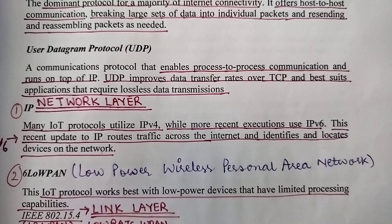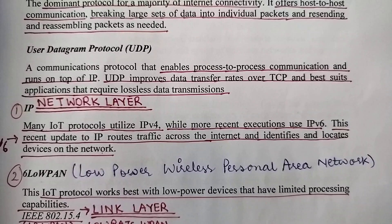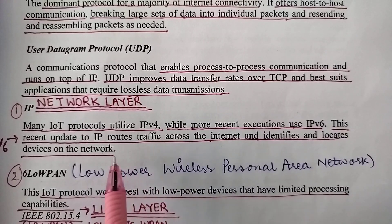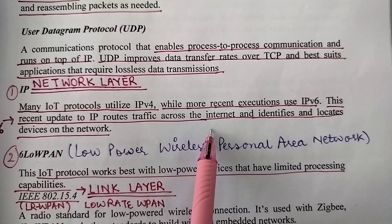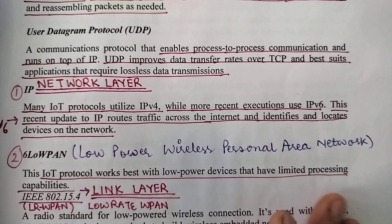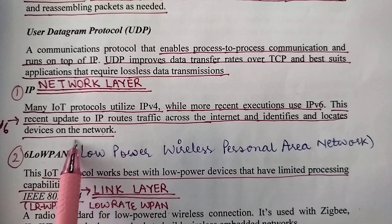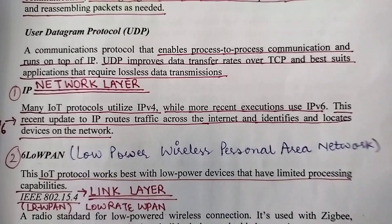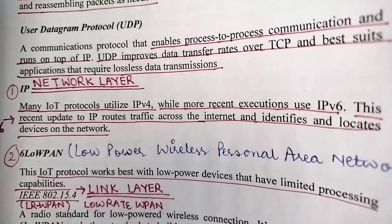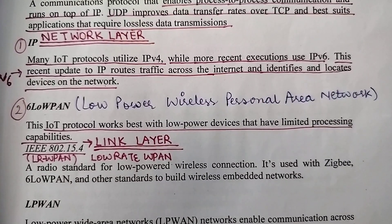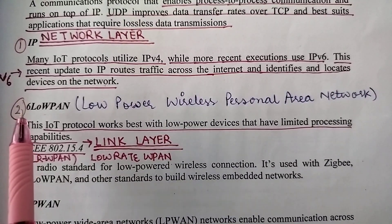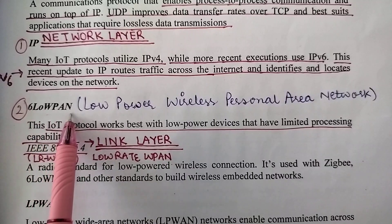An added advantage of IP version 6 is that it provides better traffic routing across the internet and helps in identifying and locating devices on the network. Now, other than IP version 4 and IP version 6, the third protocol used at the network layer is 6LoWPAN.